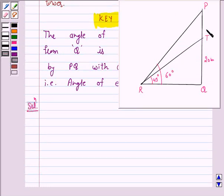PT represents a transmission tower and QT is the building which is 20 meters high. Now, the angle of elevation of P from R is 60 degrees and angle of elevation of T from R is 45 degrees.